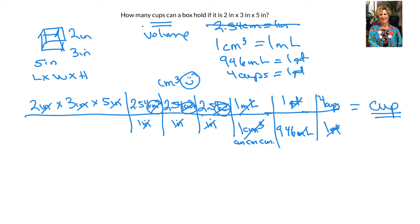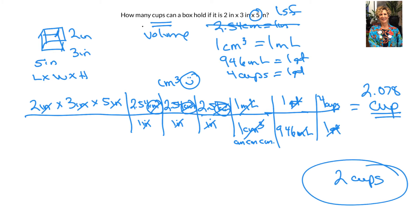I cancel out the quarts and I'm at cups, so I know I'm finished. I take my calculator: 2 times 3 times 5 times 2.54 times 2.54 times 2.54 times 1 times 4, then divided by 946. That equals 2.078 cups. I only have one sig fig in my answer, so I'm going to say this is two cups. The volume of that box that's two by three by five inches is two cups.